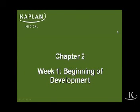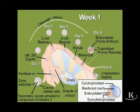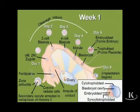Now that we have the gametes, let's take a look at what happens when they fertilize and development begins. Looking at this slide, we see there's the ovary, and remember that what gets ovulated from that ovary is a secondary oocyte.